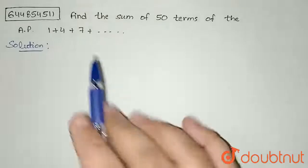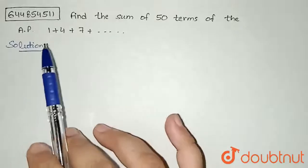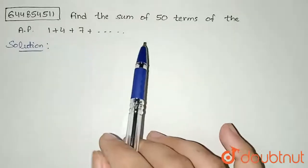Hello everyone, the question is find the sum of 50 terms of the AP 1 plus 4 plus 7 and so on.